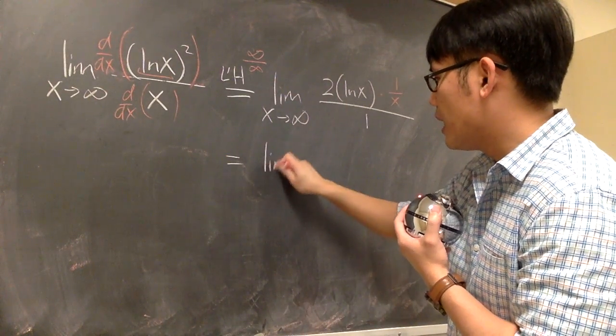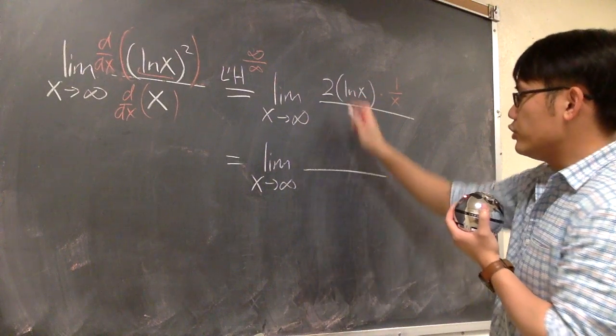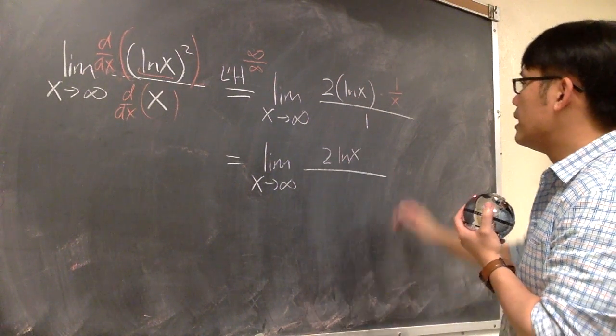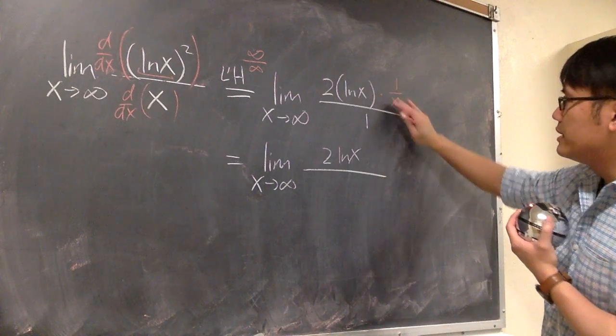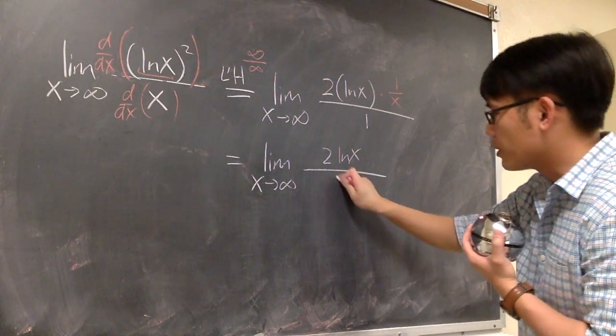And let's clean this up. This is going to be the limit as x approaches to infinity. On the numerator, we have 2 times ln x. And then let's bring the 1 over x, this part, we just need to bring the x to the denominator.